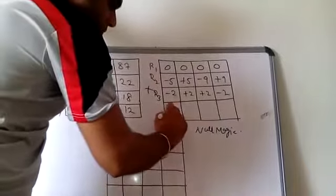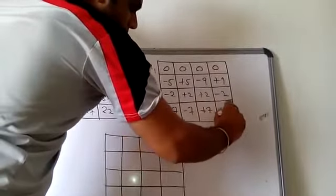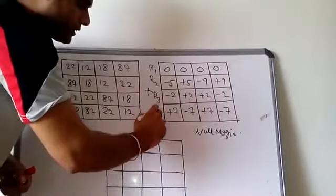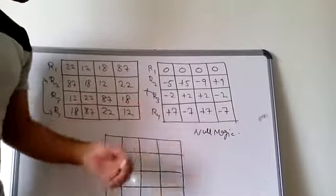Now I will see row number 4: plus 7 minus 7 plus 7 and minus 7. Now I will see row number 3 as well as your particular null square type.